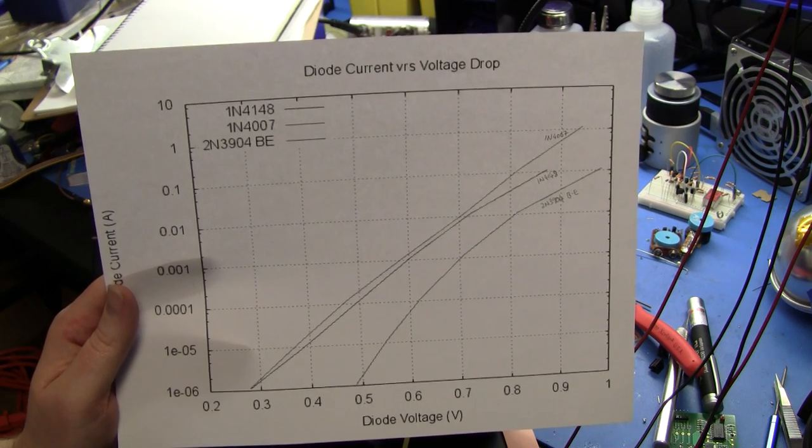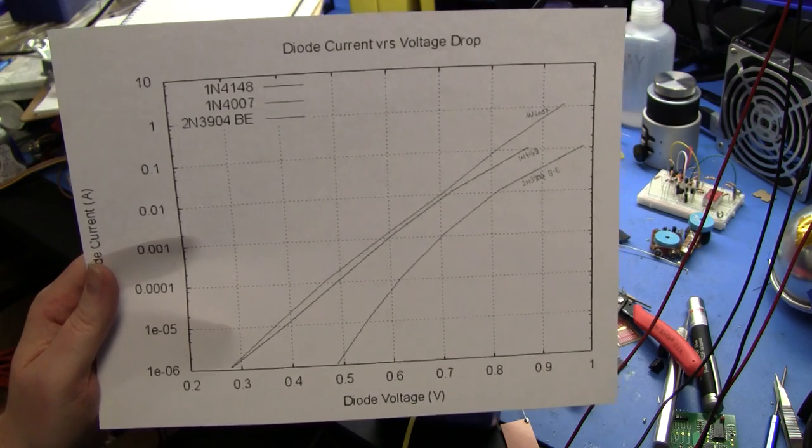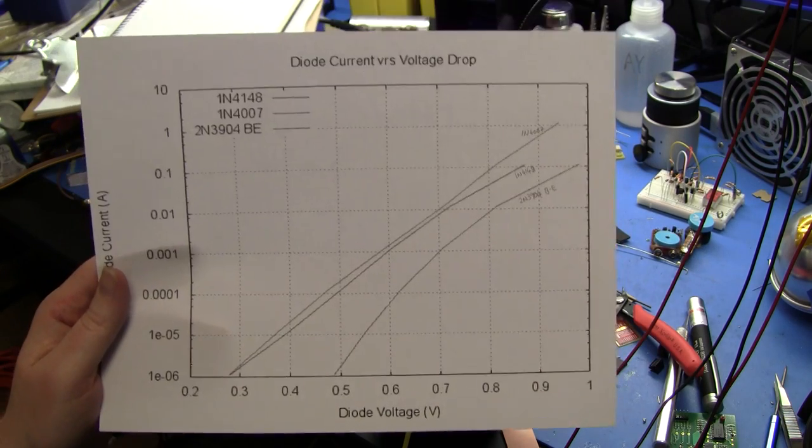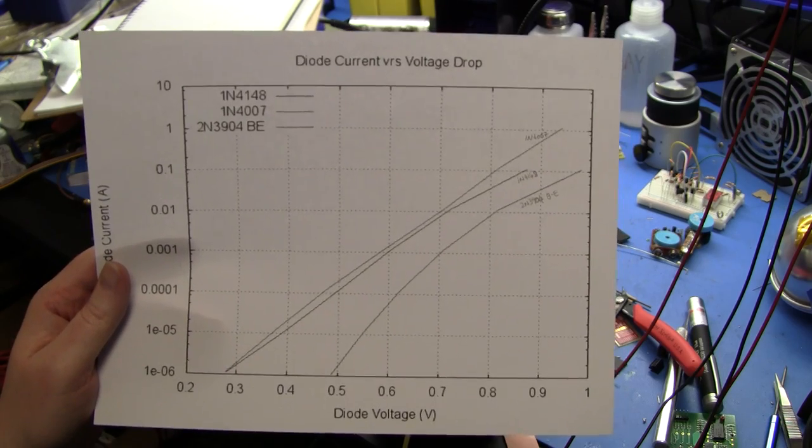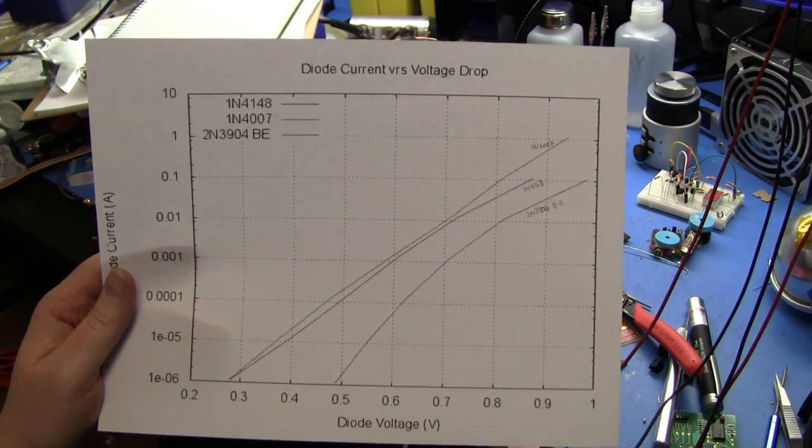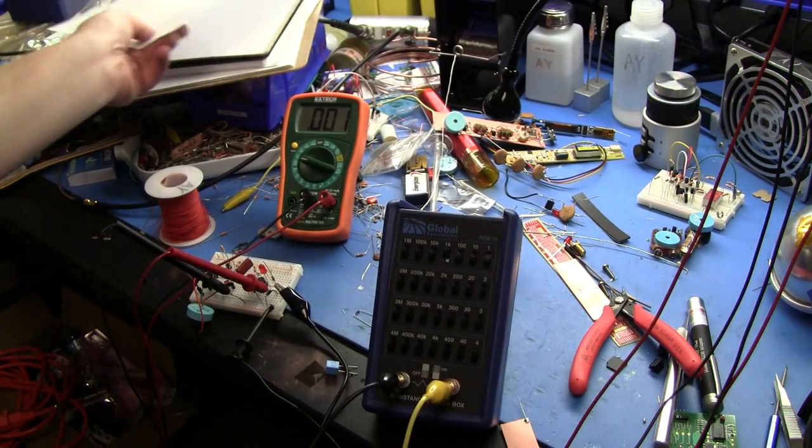That exponential, logarithmic relationship with current and voltage is super important when you start getting into bipolar junction transistors and we'll probably talk about that next time because this video is probably going to go on for quite a while anyway.